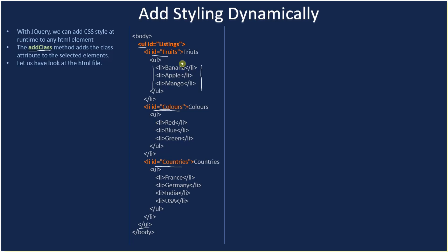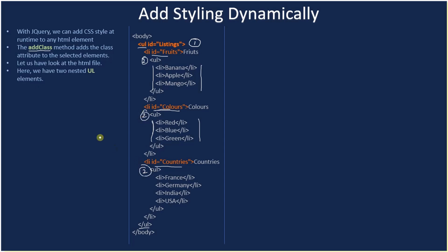We have a separate course for HTML, and this HTML is intentionally simple. Our goal is to learn jQuery, so we won't use complex HTML here — we'll keep it simple and concentrate more on jQuery. Here we have two nested UL elements: this is the topmost overall element and here is the second listing.